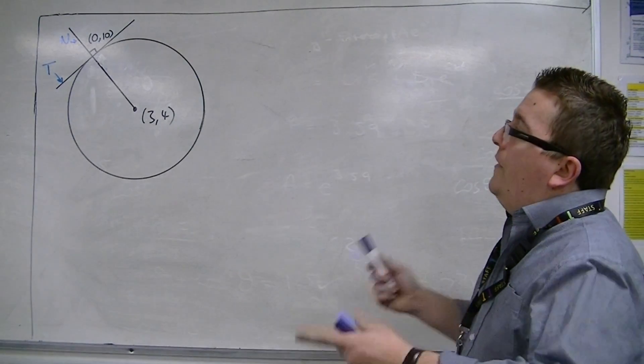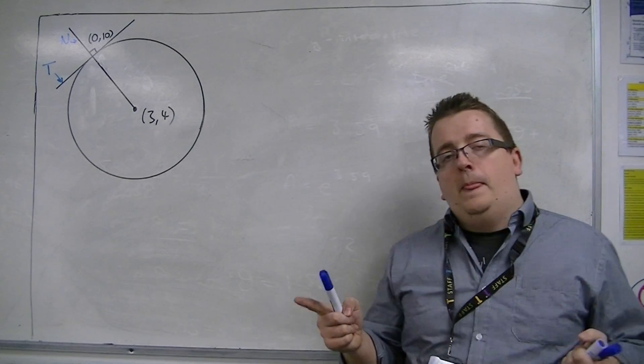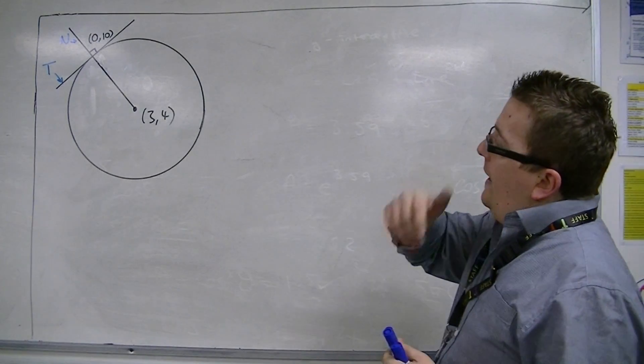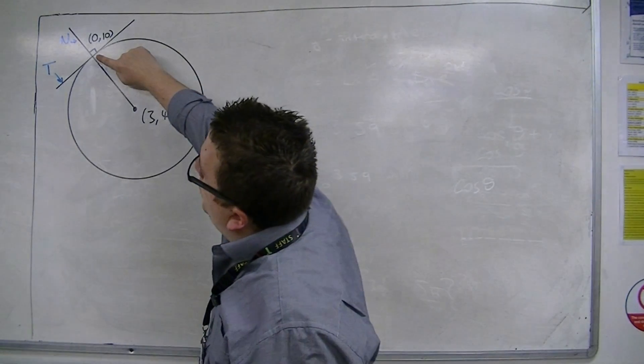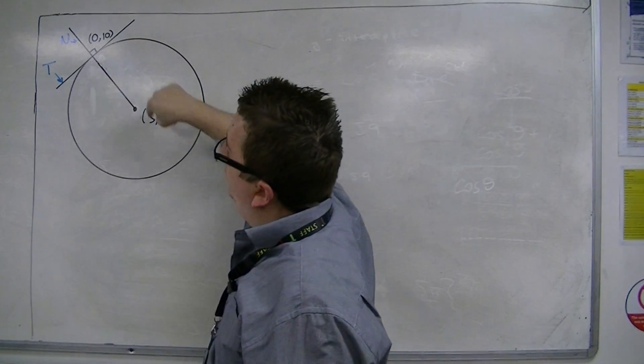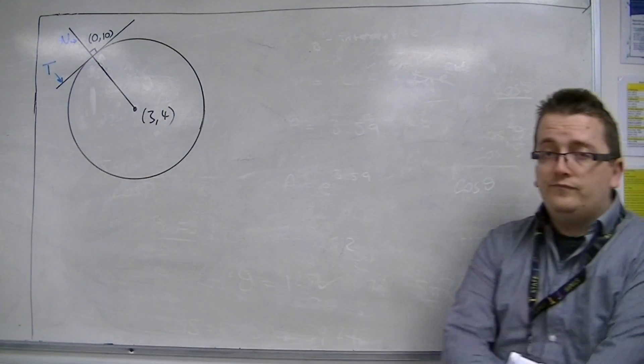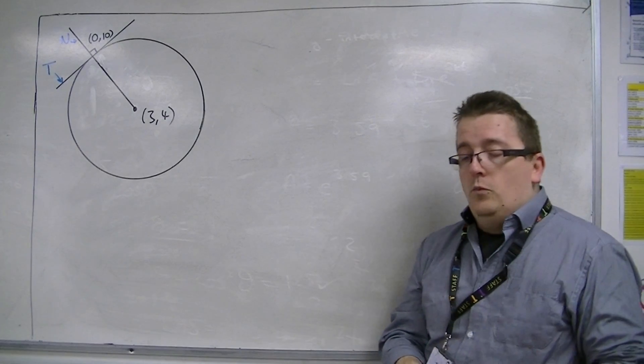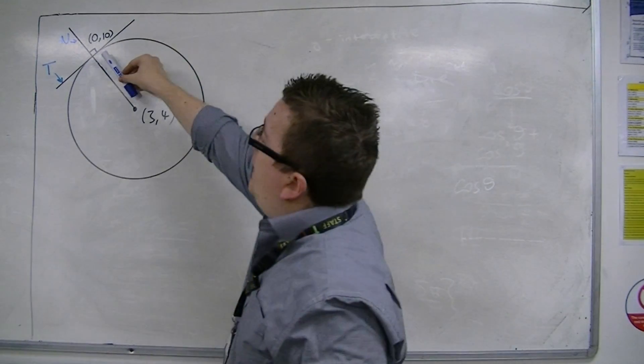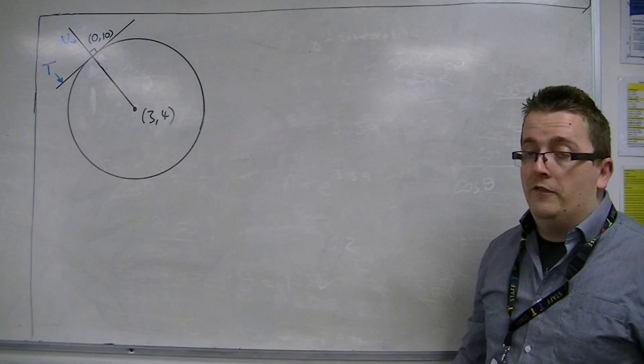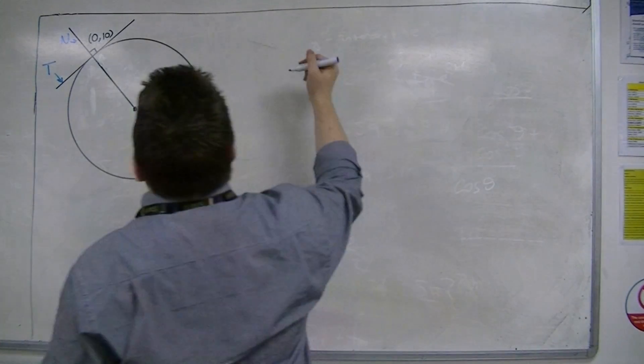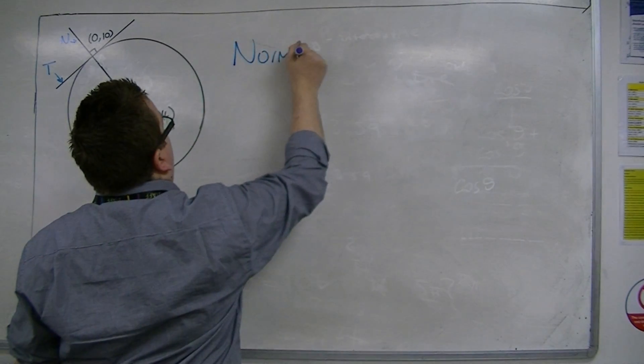Now, which one can we find out first? What we have is the coordinates of two different points, (0, 10) and (3, 4). And so, we're going to find out the equation of that line first, because that's all the information that I have available. So, I'm going to find the equation of the normal first.